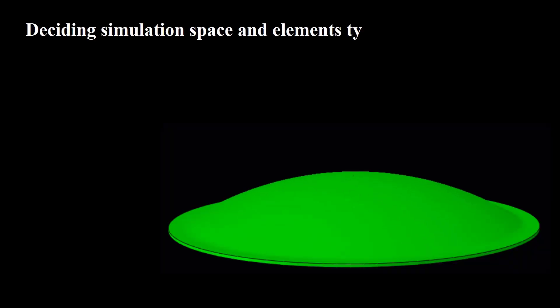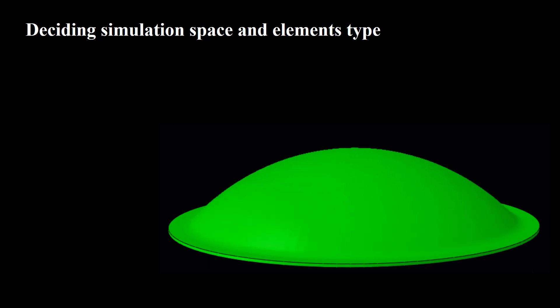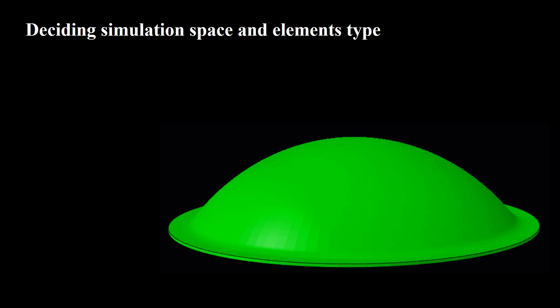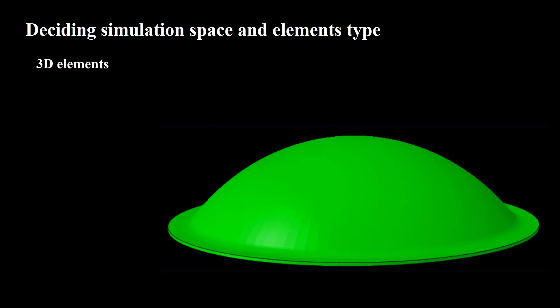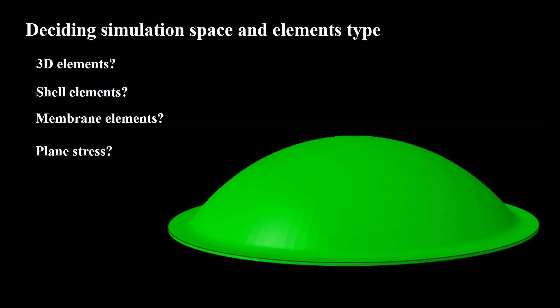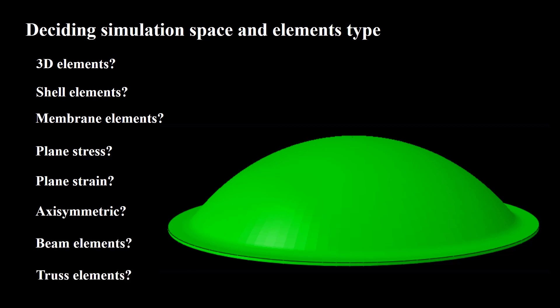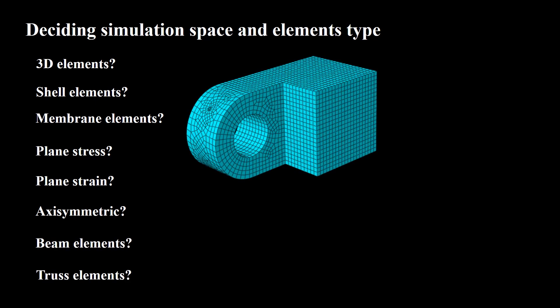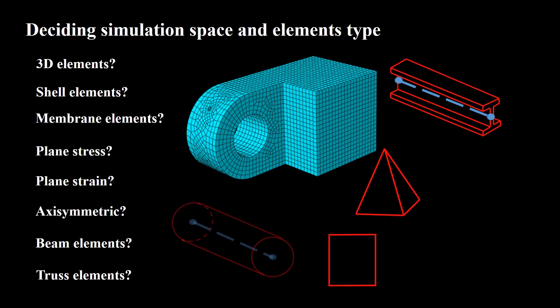Welcome to this video. This video can help you to systematically decide on the modeling space and element types for your simulations. This may cause a significant reduction in the time spent on running simulations. Imagine that we want to model a forming process like a hydrostatic bulge test. At the start of our simulations we have lots of choices: is my model three-dimensional, can I use shell or membrane elements, what about two-dimensional modeling, or beam and truss elements?